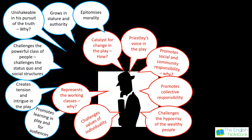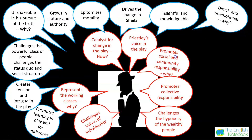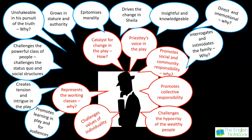Throughout the play, Priestley depicts the Inspector as somebody who actually grows in stature and authority. By the end, the Birlings are quite threatened by his presence on stage. He is insightful, knowledgeable, direct, and unemotional, and he really interrogates and intimidates them. By doing this he manages to get confessions from the other characters. He makes it very clear to all of them that a 'chain of events' may have driven Eva to her death, so the Birlings are able to see what their role was in leading to Eva Smith's death.